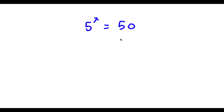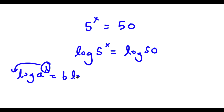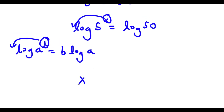Alright, so I have 5 to the power of x is equal to 50. The first thing I'm going to do is take the log on both sides. So now I have log of 5 to the power of x is equal to log 50. An important property of logarithms is that if I have something in the form log a to the power of b, I can move this exponent b to the front: b times log a. So now x times log 5 is equal to log 50.